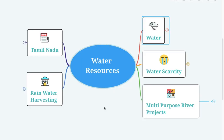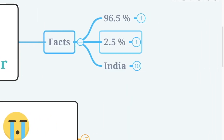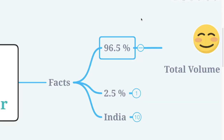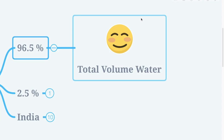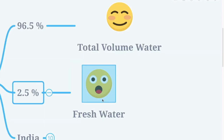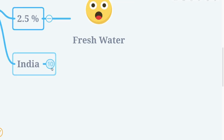Let's see some interesting facts and figures about water. 96.5% of the total volume of the world's water is estimated to exist as oceans. Don't be too happy about it, because only 2.5% is fresh water.